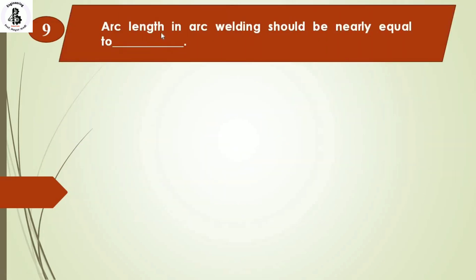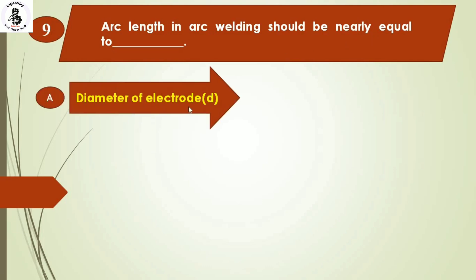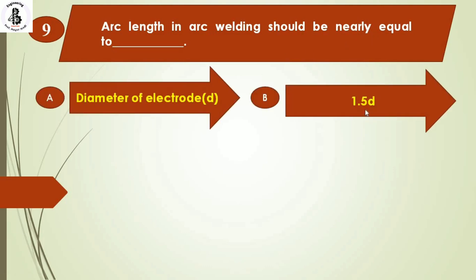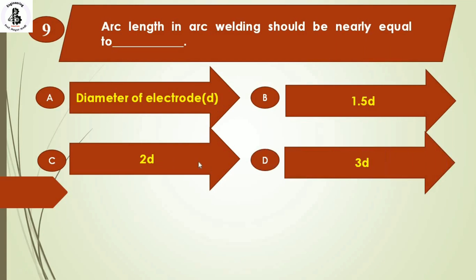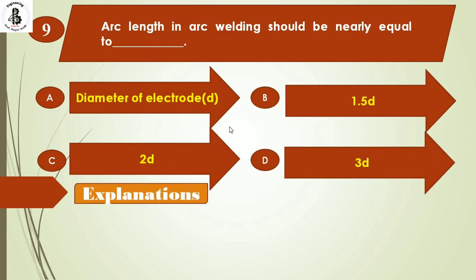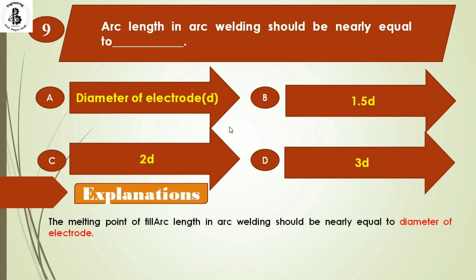Arc length in arc welding should be nearly equal to: Option A: diameter of electrode. Option B: 1.5 times the diameter. Option C: twice the diameter. Option D: thrice the diameter. In arc welding, the arc length should be nearly equal to the diameter of the electrode. So the right answer is option A.